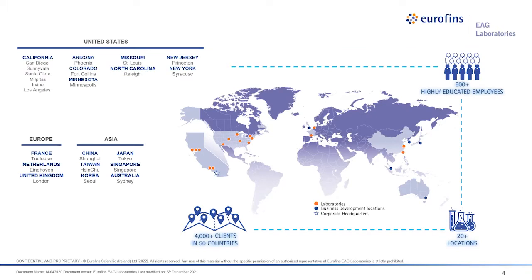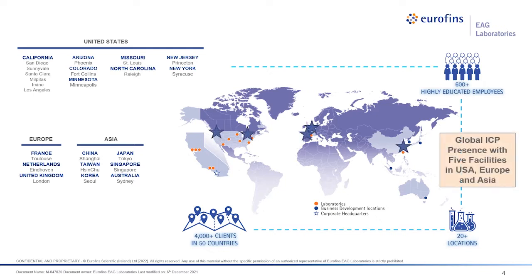Eurofins EAG Laboratories is a global scientific services company. With 16 laboratories in over 20 locations, we serve more than 4,000 clients worldwide. Our 600-plus highly educated and skilled employees, combined with industry-leading state-of-the-art technology, enable us to leverage the power of science and engineering to accelerate innovation, creative problem-solving, objective analysis, and expert interpretation of data. We have a global ICP footprint with facilities in five locations across three continents.